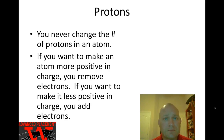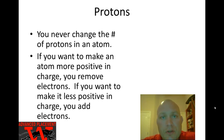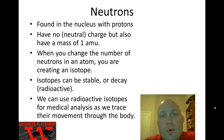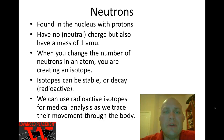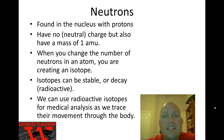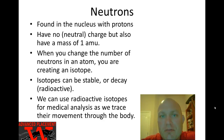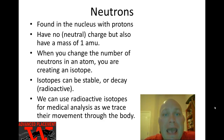The number of protons is how we define what an atom is. If an atom has one proton, it's hydrogen; two protons, it's helium; three is lithium, and so on. So when manipulating the charge of an atom, you never change the number of protons — you always manipulate the number of electrons. To make an atom more positive, you take away negative electrons; to make it more negative, you add negative electrons.